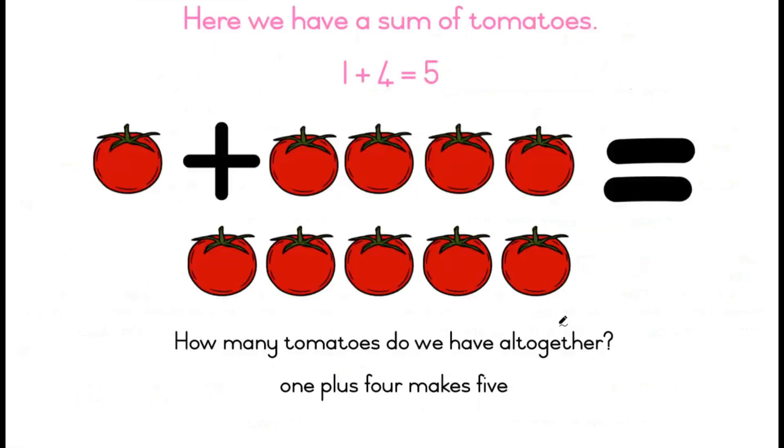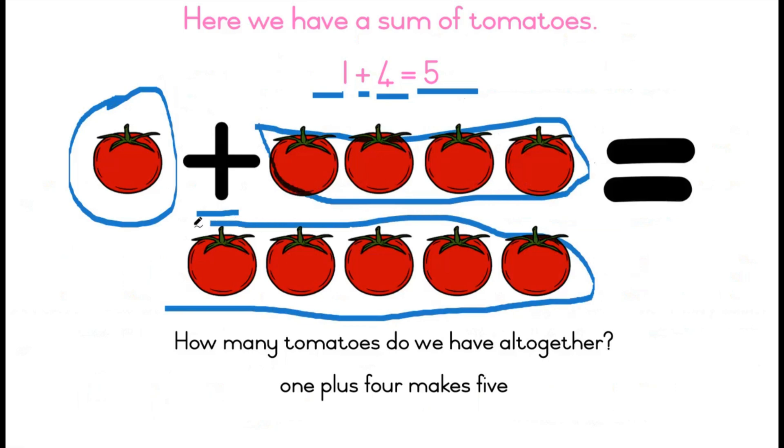Here we have a sum of tomatoes. One plus four equals five. One tomato plus four tomatoes equals five tomatoes. How many tomatoes do we have altogether? Let's see.